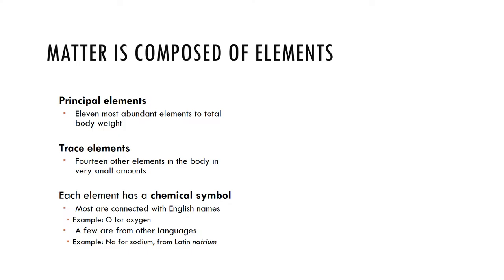Matter is composed of elements, and elements cannot be broken down by ordinary chemical means. Elements have unique physical properties and chemical properties. Physical properties are those things we can detect with our senses and they're measurable. Chemical properties are how atoms interact or bond with one another. Each element has a unique chemical symbol.